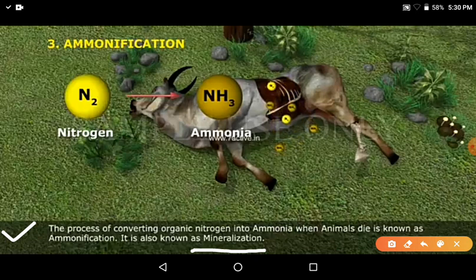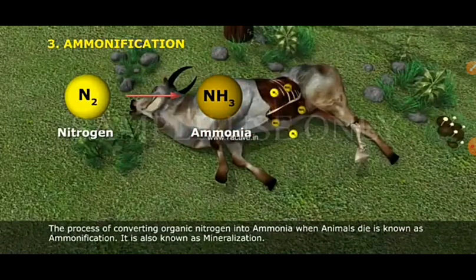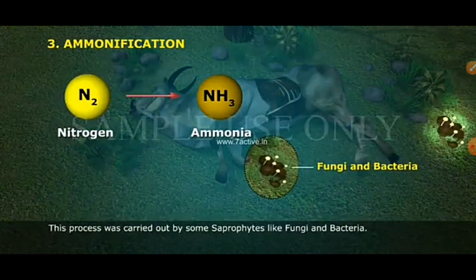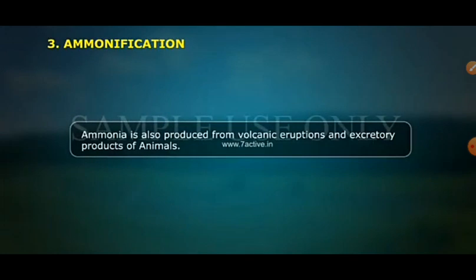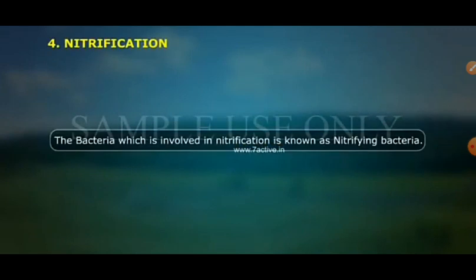The next step in the nitrogen cycle is nitrification. In ammonification, various compounds are formed. While some compounds can be absorbed by plants, the rest need to be converted into nitrates. These compounds are converted into nitrates by nitrifying bacteria. This process is called nitrification.